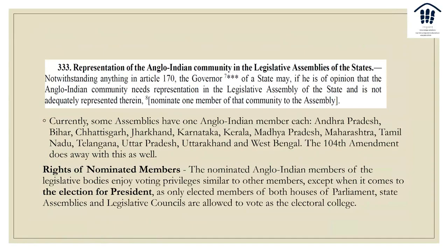Article 333, as we talked about, is about Anglo-Indians in state assemblies. Currently, many assemblies have Anglo-Indian members — Andhra, Chhattisgarh, Bihar, Jharkhand, Karnataka, Madhya Pradesh, Maharashtra, Tamil Nadu, Telangana, and Uttarakhand. So many assemblies have Anglo-Indian members, and therefore not having representation would be strange in a democracy.